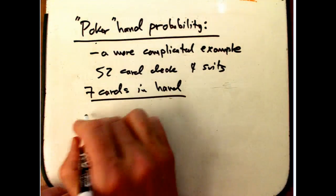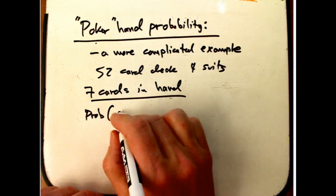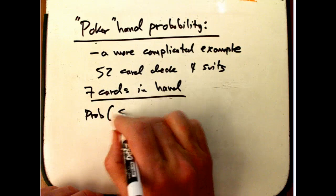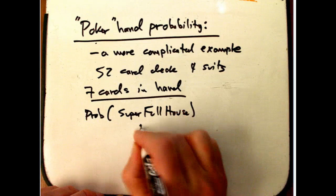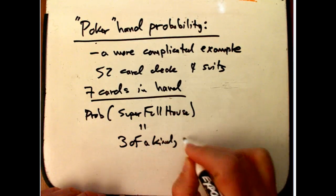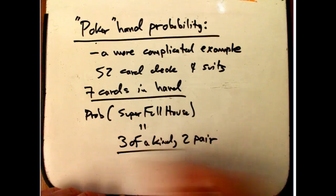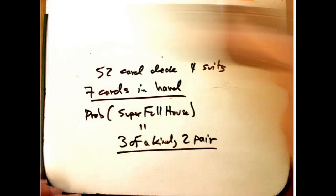And so what we want to do is we want to get the probability of getting, let's say, what do I want to call this? I want to call this like a super full house, which will mean a triple, a three of a kind, and two pair all together. So that makes seven cards. Hopefully that sounds like a fairly special hand. I think that sounds like a pretty good hand. So I think the probability is going to be fairly small to get it, but it's not exactly obvious how hard that's going to be out of seven cards. But it's going to illustrate something just a little different.